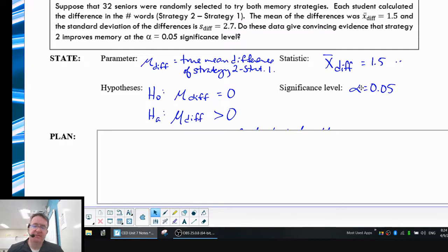X bar difference is 1.5. Significance level is 5%. Your two hypotheses are going to be that the mean difference is 0, because null hypothesis is always going to be nothing changes. The alternative hypothesis, we're saying the strategy 2 improves the memory. So we want strategy 2 to be bigger, and therefore we're saying for the alternative hypothesis that mu difference is going to be greater than 0.